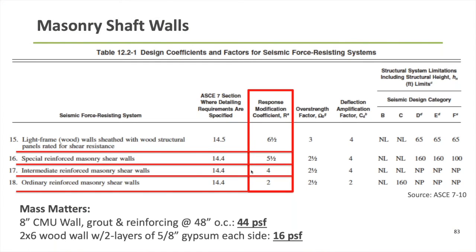From a seismic performance perspective, this table from ASCE 7 lists seismic response coefficients for different seismic force-resisting systems. For light frame wood shear walls, R equals 6.5. For masonry shear walls, depending on the level of seismic detailing, R values range from 2 to 5.5. The higher the R factor, the lower the seismic forces. So right off the bat, using masonry shear walls means our seismic forces are going to be higher. Also, mass directly ties to seismic forces — a typical masonry shaft wall weighs about three times as much as a typical wood frame shaft wall, so that increase in weight directly correlates to increased seismic forces.